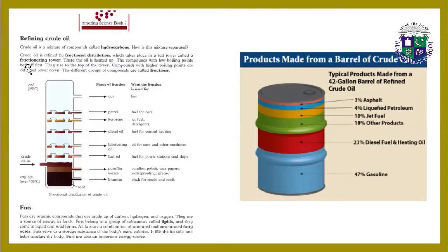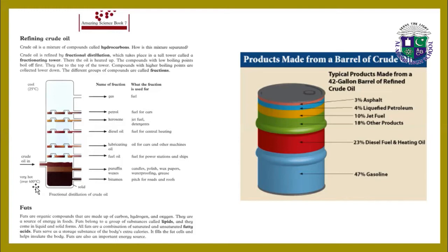Refining crude oil: crude oil is a mixture of compounds called hydrocarbons. This mixture is separated by fractional distillation, which takes place in a tall tower called a fractionating tower. The oil is heated up; the compounds with low boiling points boil off first and rise to the top of the tower. Compounds with higher boiling points are collected lower down. The different groups of compounds are called fractions. The crude oil enters the tower at over 400 degrees centigrade.